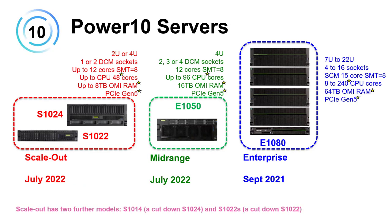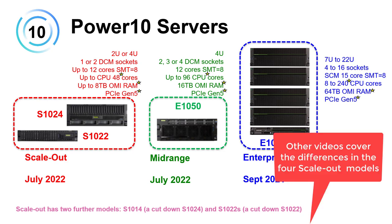And here are the Power10 machines — small, medium, large, scale-out, mid-range, enterprise. Notice that Power10 is lowercase letters and no space. Please get it right. In the scale-out machines, the important thing is we've got twice the number of cores, twice the amount of memory, and it's OMI memory which is a lot faster. Similar for the E1050, but we're not covering that here. The scale-out has two further models, the 1014 and the 1022s — cut-down models of those primary two.